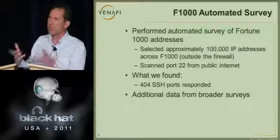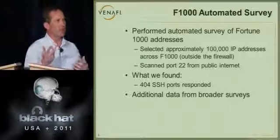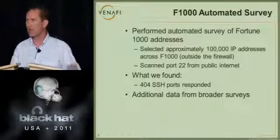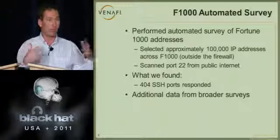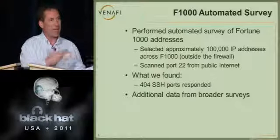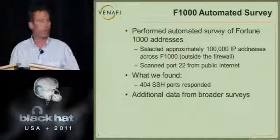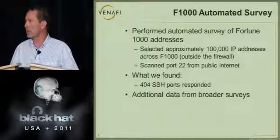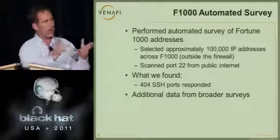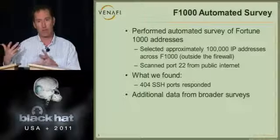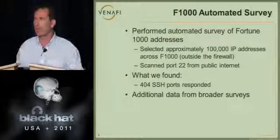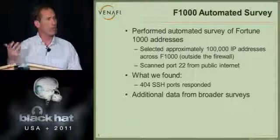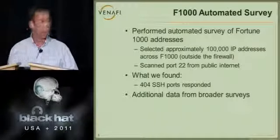I'm going to provide some statistics throughout the presentation. The first set comes from a Fortune 1000 survey — we went to Fortune.com, got the list of the Fortune 1000, found what IP address ranges those companies owned, looked on port 22, and brought back the data. There were about 400 hits on those 10,000 addresses we scanned. I'll contrast the Fortune 1000 data with broader general data from hundreds of thousands of SSH keys we've collected.